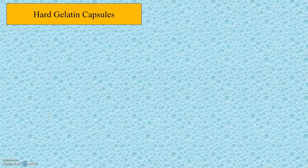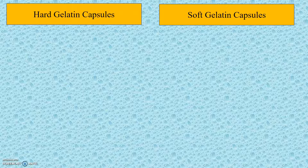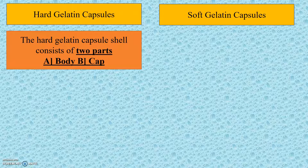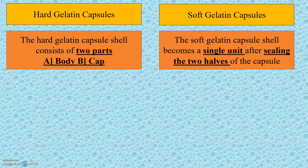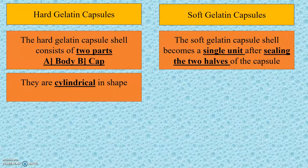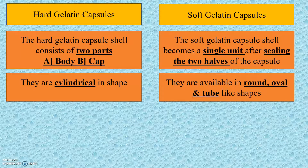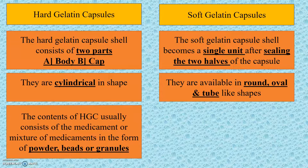Now let us see the difference between hard gelatin capsules and soft gelatin capsules. The hard gelatin capsule shell consists of two parts — first is the body and second is the cap — whereas the soft gelatin capsule shell becomes a single unit after sealing the two hulls of the capsule. The hard gelatin capsules are cylindrical in shape, whereas the soft gelatin capsules are available in round, oval, and tube-like shapes.